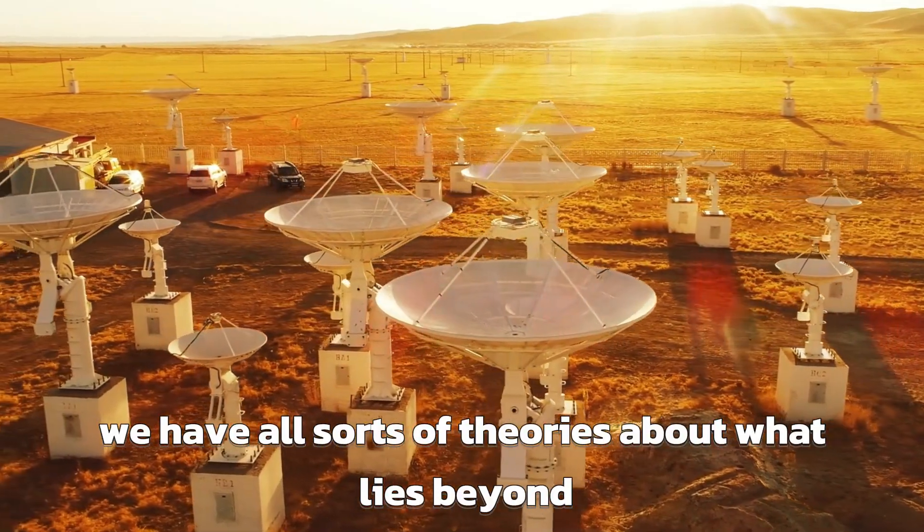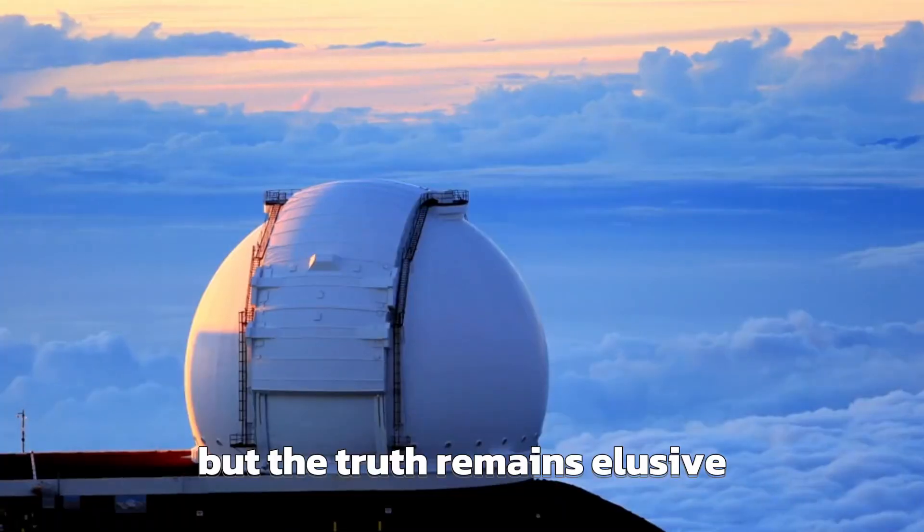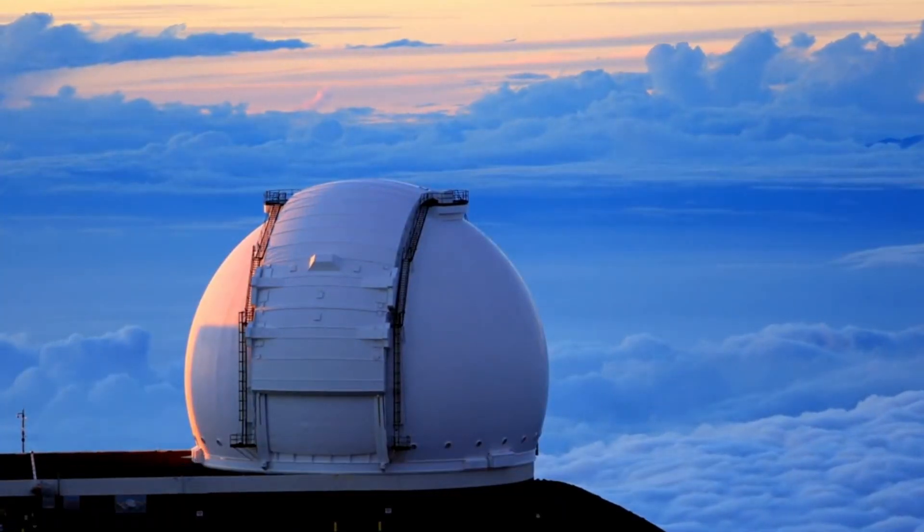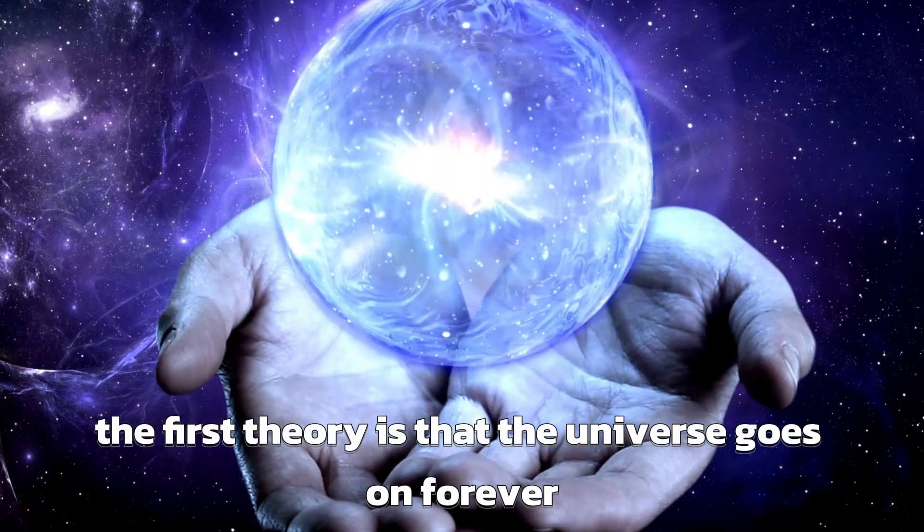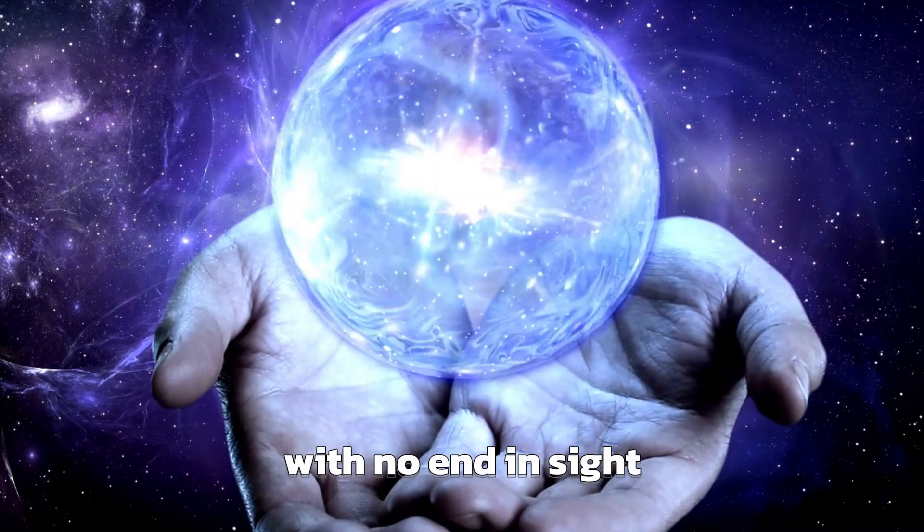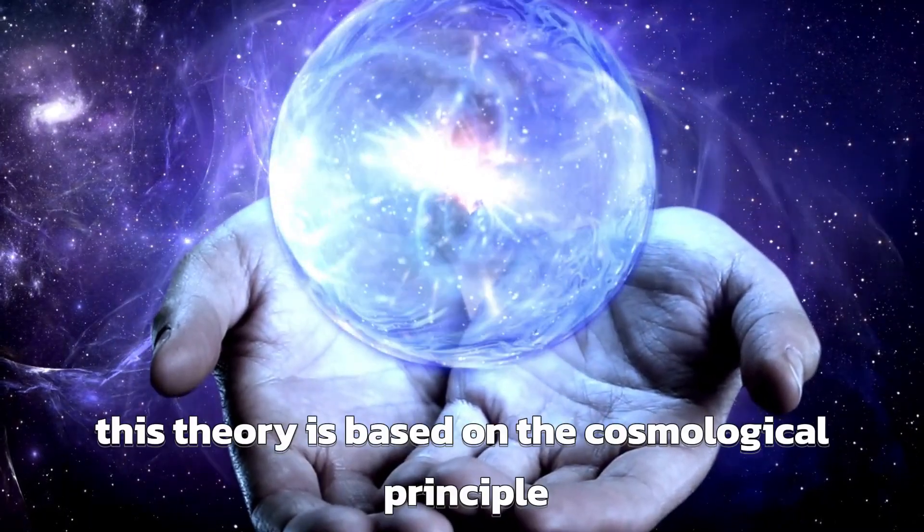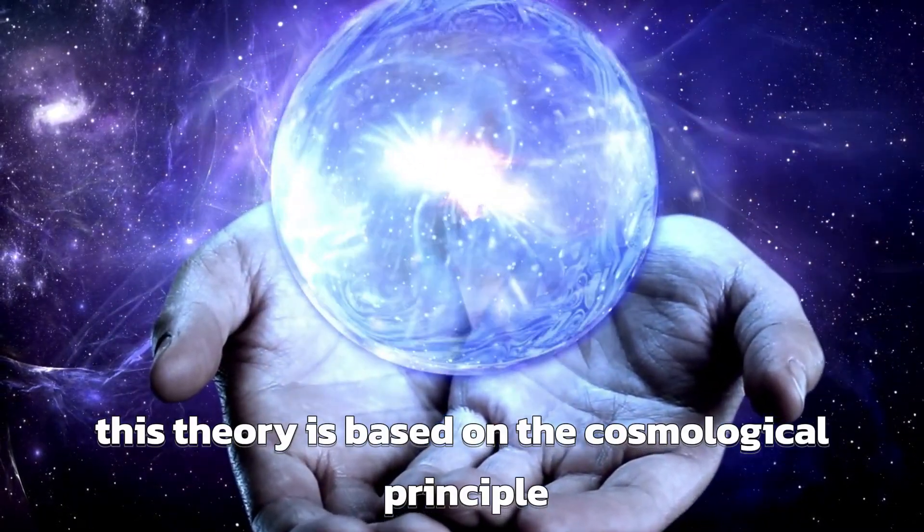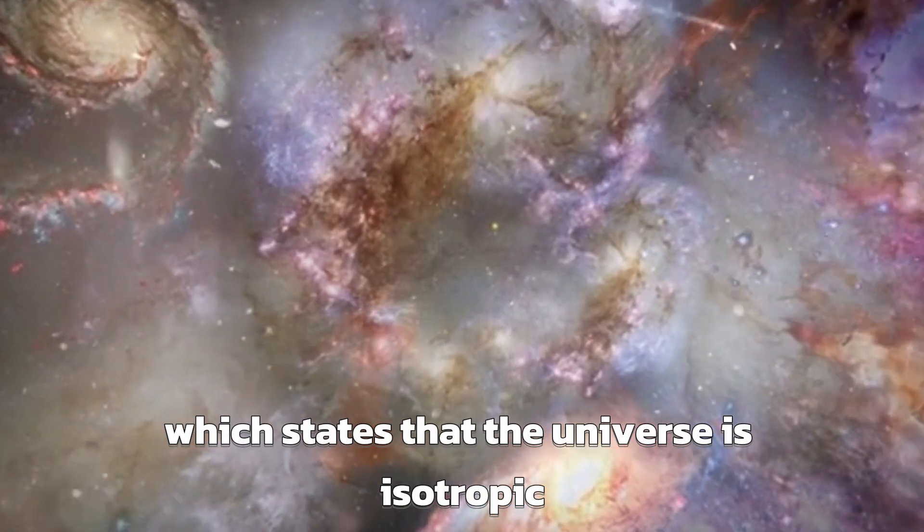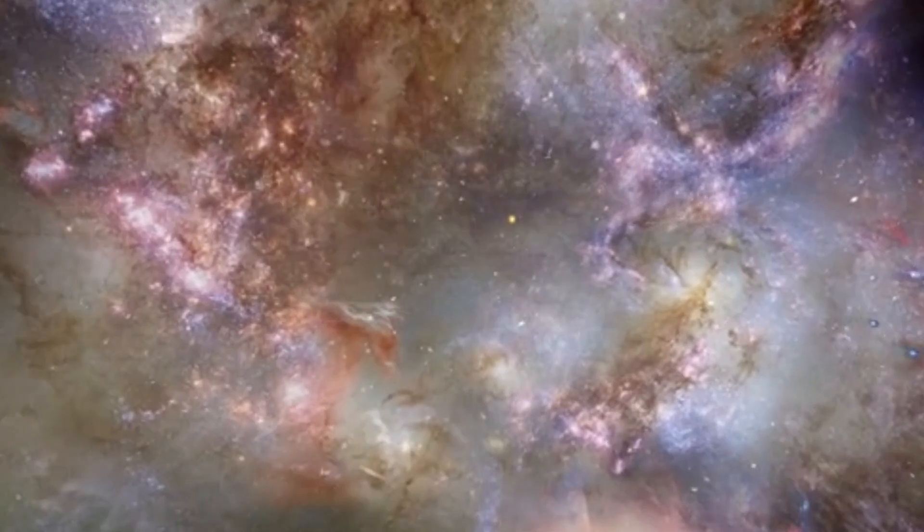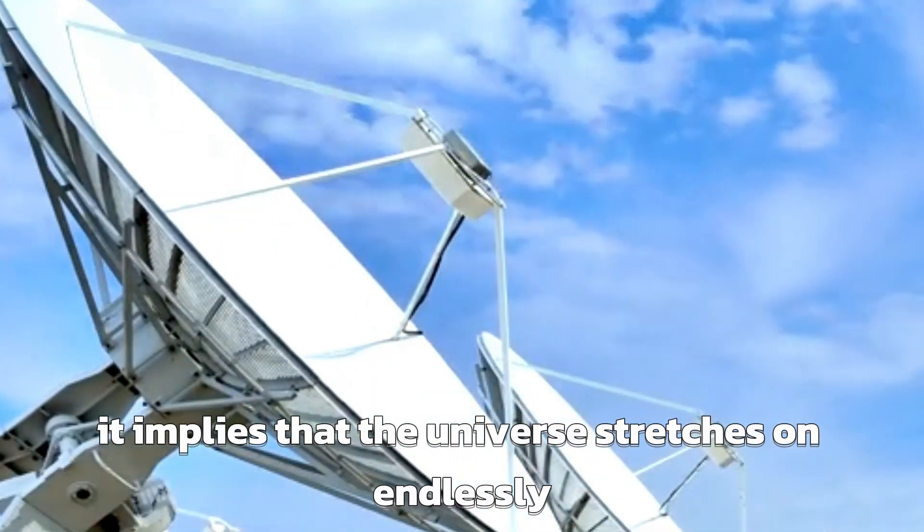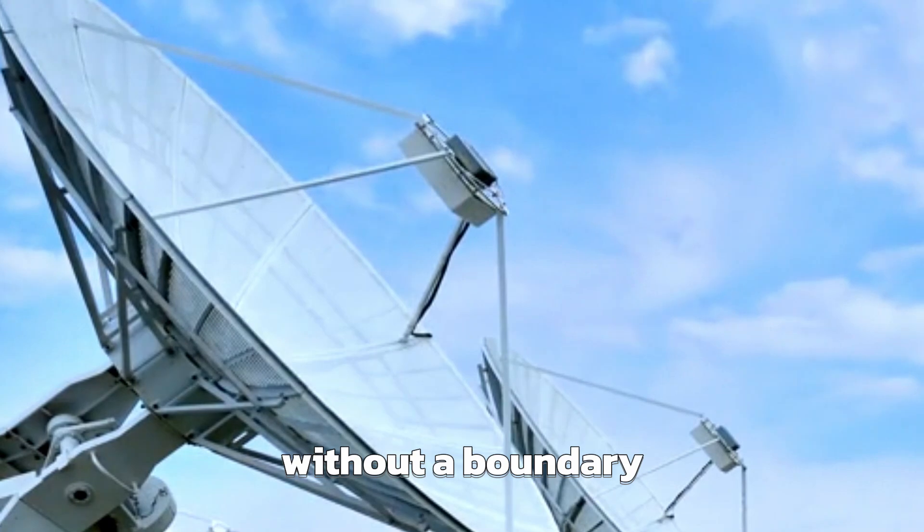We have all sorts of theories about what lies beyond, but the truth remains elusive. However, there are three theories that stand out. The first theory is that the universe goes on forever, with no end in sight. This theory is based on the cosmological principle, which states that the universe is isotropic, meaning that it looks roughly the same in every direction. If this principle holds true, it implies that the universe stretches on endlessly without a boundary.